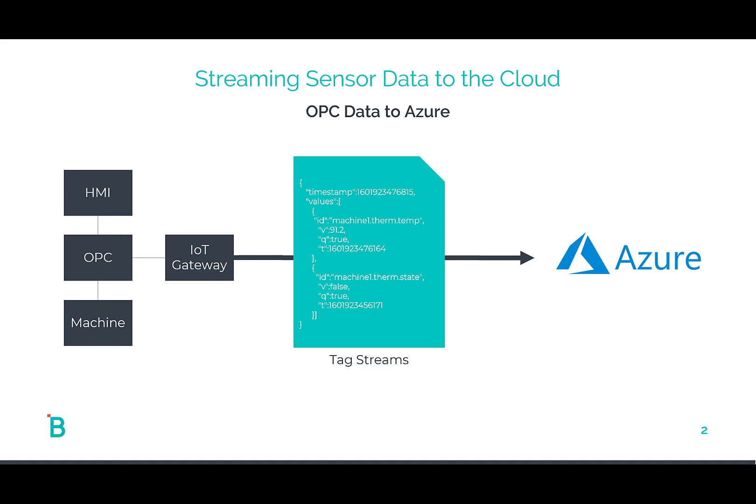On the factory floor, we have machines driven by PLCs. We have an OPC server connected to those PLCs and then feeding data into an HMI. HMIs and OPC servers are driven off of tags — discrete streams or value streams.